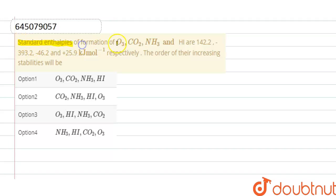Standard enthalpies of formation of ozone, CO2, NH3, and HI are given respectively. The order of their increasing stabilities will be.